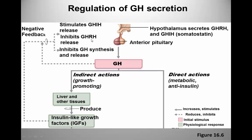Growth hormone-releasing hormone stimulates the release of growth hormone, whereas growth hormone-inhibiting hormone inhibits its release. These two hormones are further regulated by negative feedback. A rise in growth hormone and IGF levels will inhibit the release of growth hormone-releasing hormone, but will stimulate the release of the inhibiting hormone. The release of these two hormones can further be modified by various blood nutrient levels. For example, lowering blood glucose levels will stimulate the release of growth hormone-releasing hormone.